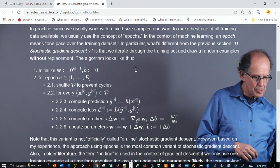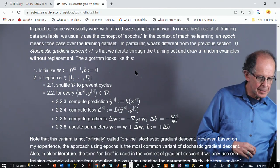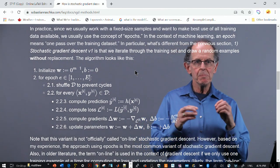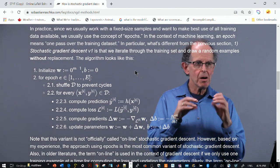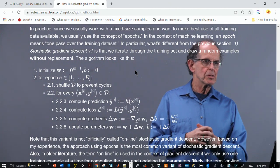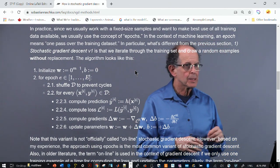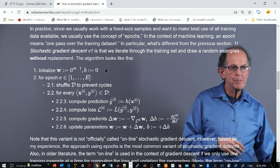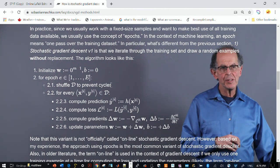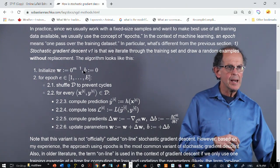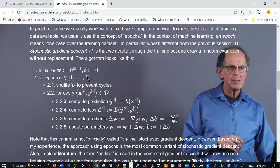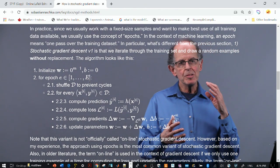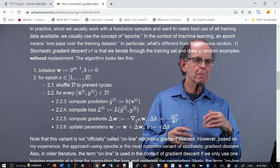All right, the second one is slightly different. We are going to introduce the idea of an epoch. An epoch is running through all your data. So let's see what you do. First of all, you shuffle all the data randomly, just like a card deck. And for each epoch, notice there's a capital E for the number of epochs.